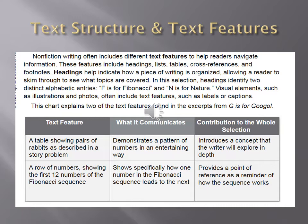This chart explains two of the text features found in the excerpts from G is for Google. As we see, the chart has three columns: the first is the text feature, the second is what it communicates, and the last is contribution to the whole selection. Let's look at the beginning of the text features in our selection.